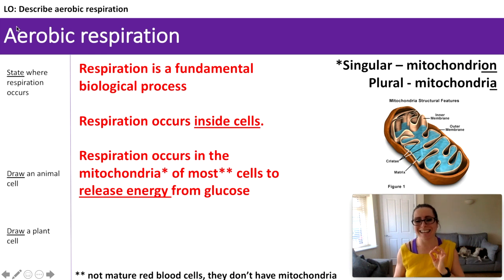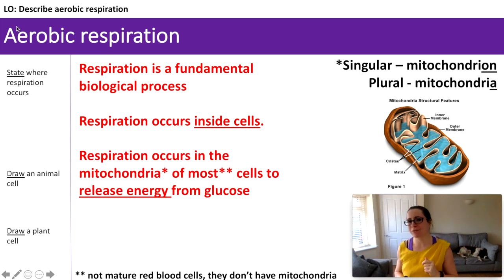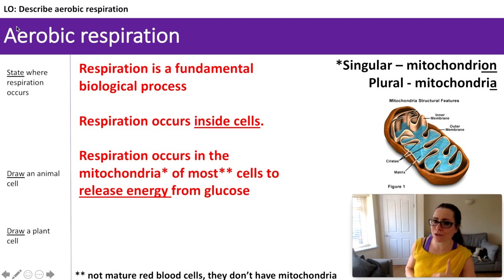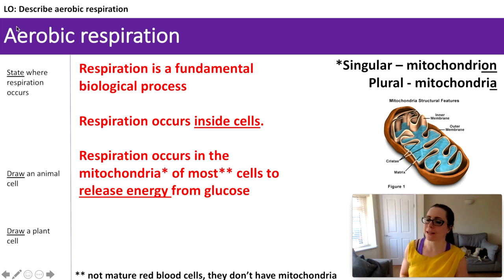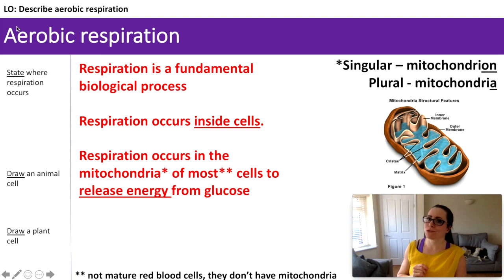Just as a little recap before we go any further: can you remember how to draw an animal cell and a plant cell? We've said mitochondria are present in both. Can you remember what other subcellular organs are present? With animal cells at key stage three we said there were just three; at GCSE we added two more, though one of them is too small to be seen with a light microscope.